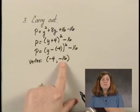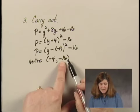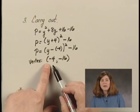This tells us the minimum product is negative 16, and this occurs when y is negative 4.